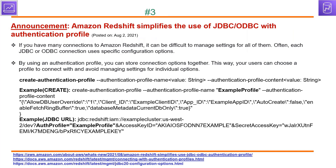The next update is on Amazon Redshift. Amazon Redshift simplifies the use of JDBC and ODBC with an authentication profile. If you have many connections to Amazon Redshift, it can be difficult to manage settings for all of them. By using an authentication profile you can store connection options together. You can create a profile with a profile name and authentication settings — including allow DB user overwrite, in JSON format, with fields like client ID, app ID, and auto create. To use it, you specify auth profile as part of a JDBC URL.